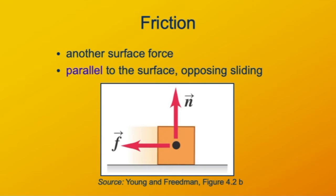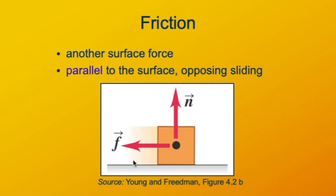This diagram is showing two forces: the normal force N, pointing away from the surface into the object, and the force of friction pointing in the leftward direction. This would happen if the object is sliding to the right, which is what the shadow is trying to show. Friction is pulling it back to the left to slow it down — it's opposing its motion.